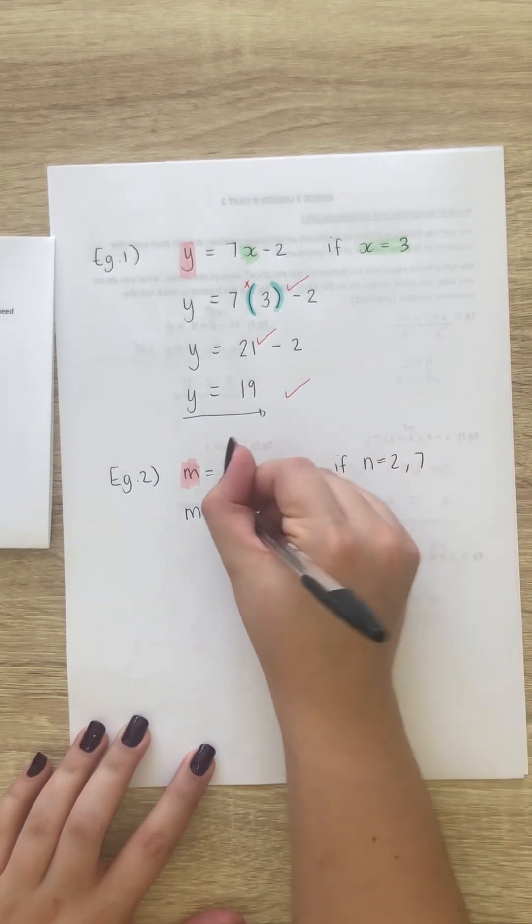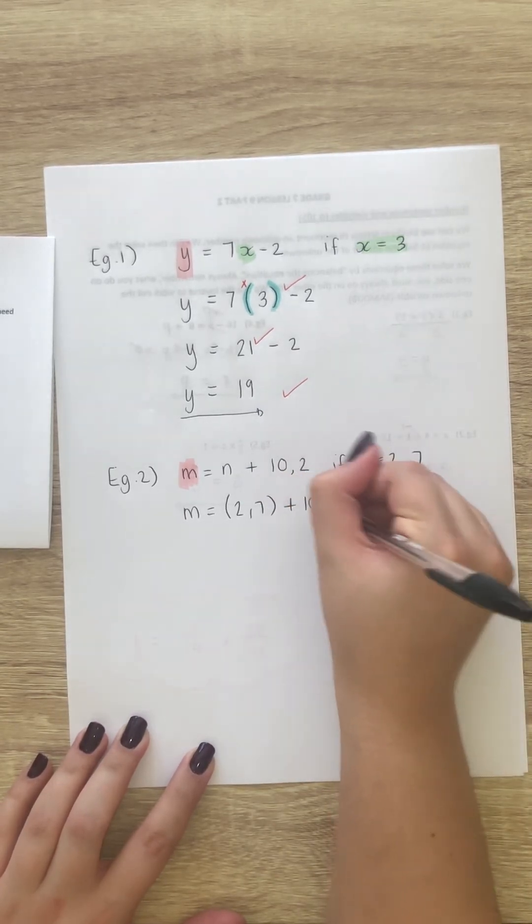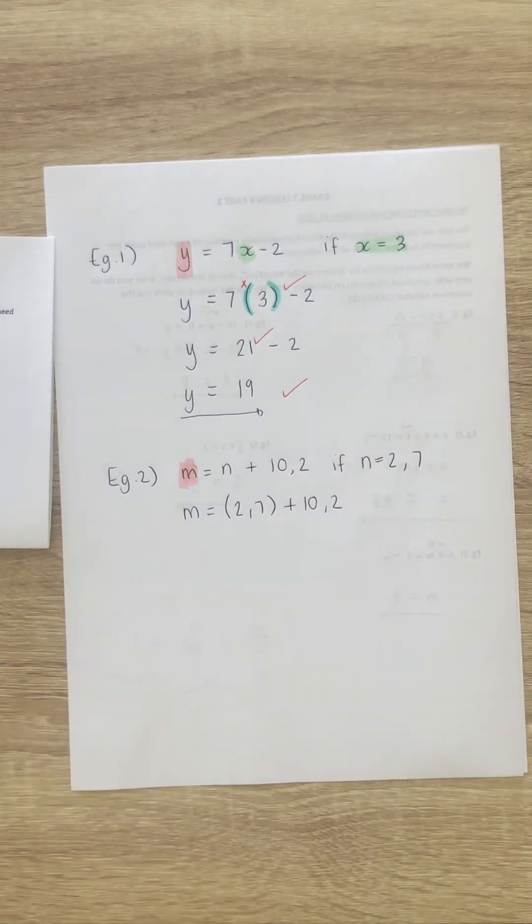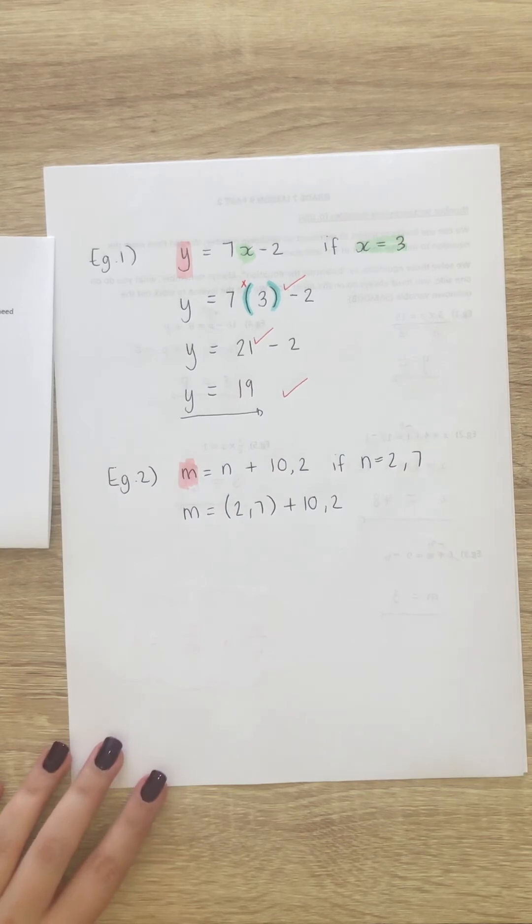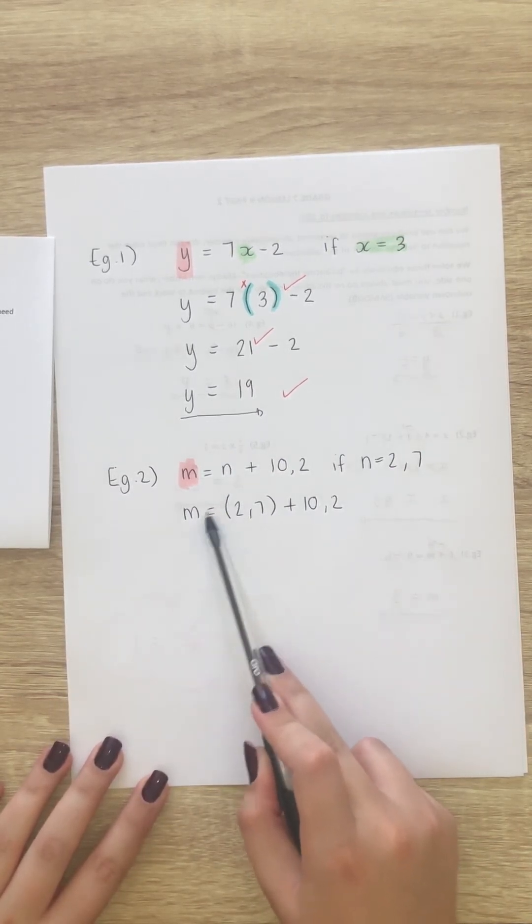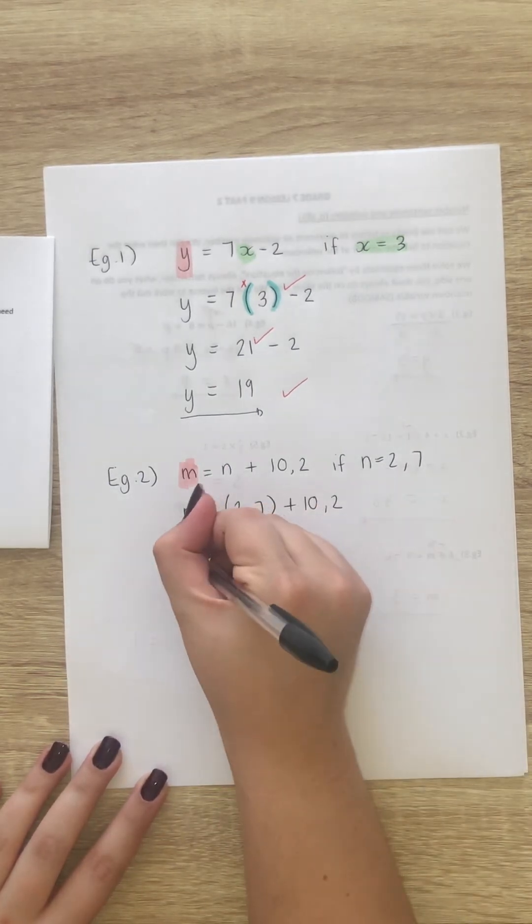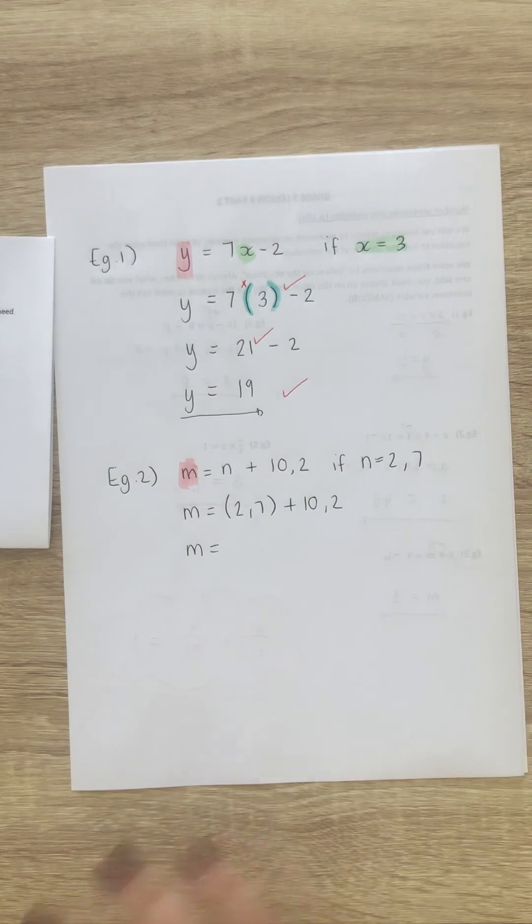So, we've got 2 comma 7. They tell you n is equal to 2 comma 7. The rest stays the same. Plus 10 comma 2. Now, we've only got one operation. This is not multiplied by anything because there's no number on the side. So, all we need to do now is add these two decimals. So, if you can't do it in your head, you're welcome to do a sum on the side. Remember to line up your decimals, your commas.